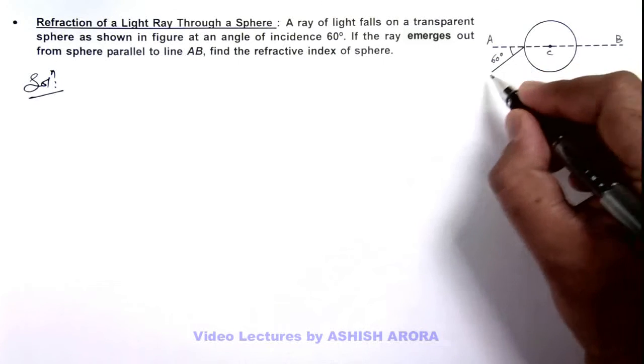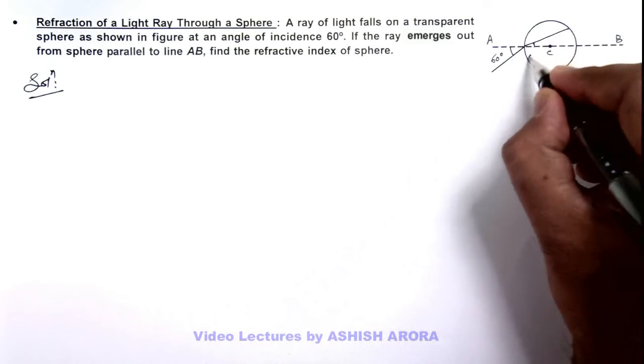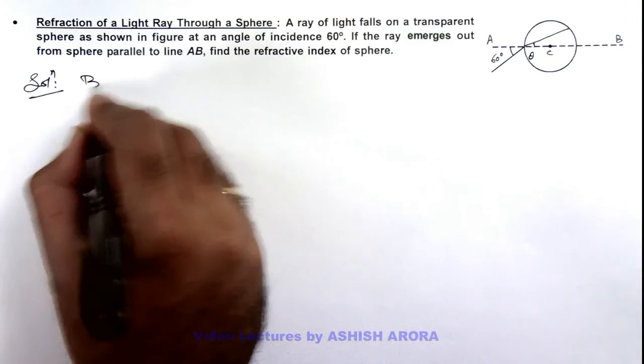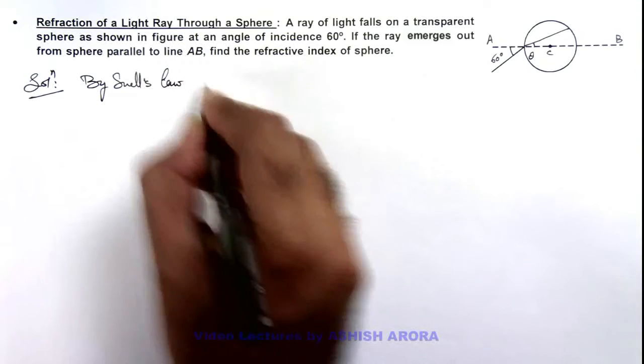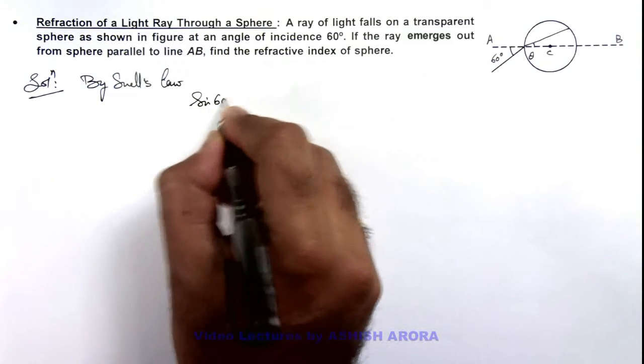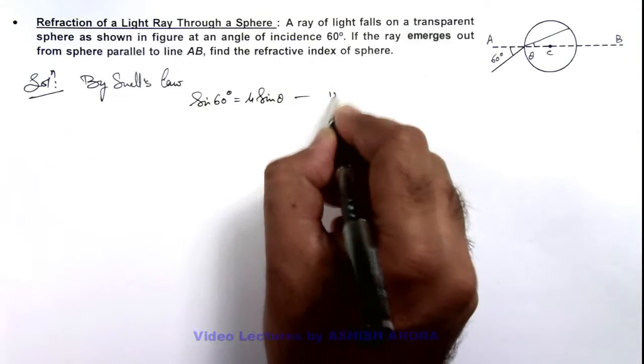If light is entering at 60 degrees, it will refract at an angle theta. By Snell's law, we can write: 1 times sine 60 degrees equals mu times sine theta, which we take as equation 1.